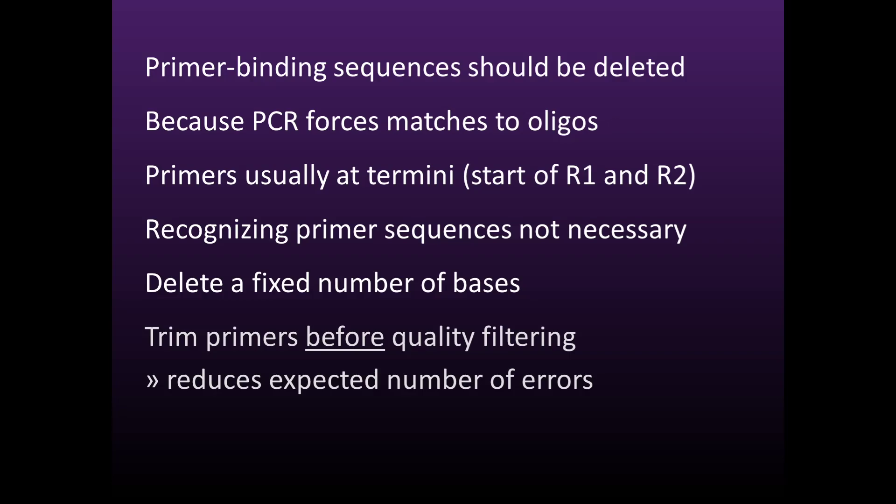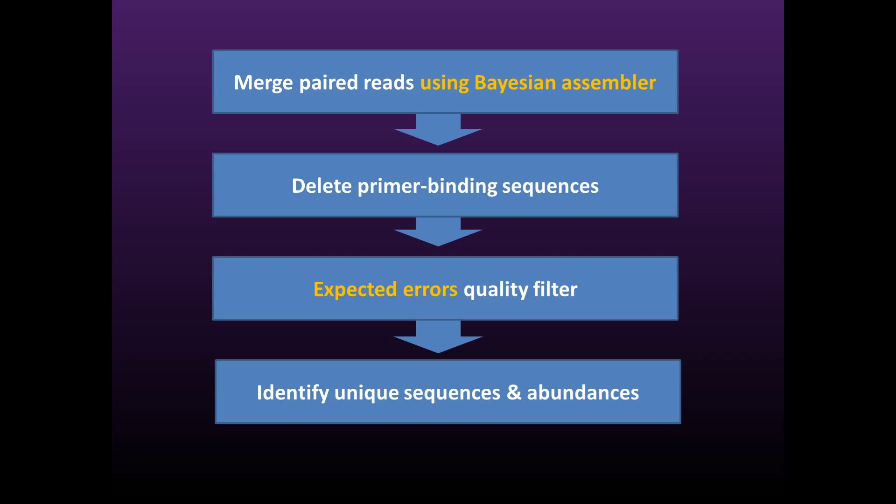To summarize, these are the steps required to process typical paired Illumina reads before OTU clustering or denoising. Reads should be merged using a Bayesian assembler. Next, the primer binding sequences should be deleted. Then quality filtering should be done using an expected error filter. And finally, the unique sequences and abundances are identified.